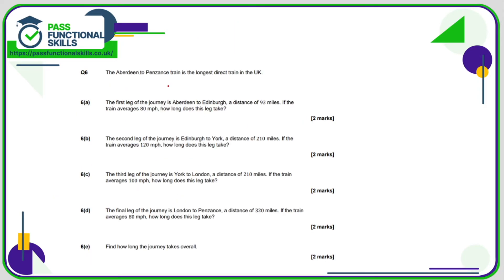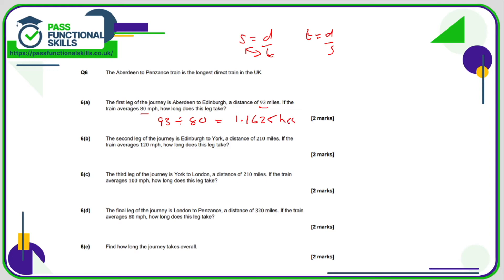Aberdeen to Penzance is the longest direct train in the UK. The first leg is a distance of 93 miles at a speed of 80 miles per hour, so time is distance divided by speed: 93 divided by 80 comes to 1.1625 hours. For part two, time is distance divided by speed: 210 divided by 120 comes to 1.75 hours.